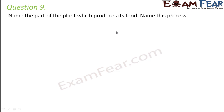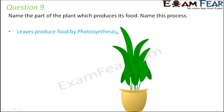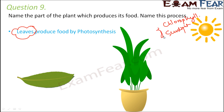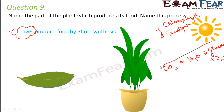Question number 9: name the part of the plant which produces its food, and name the process. Food is prepared by photosynthesis — that is, synthesizing food in the presence of light. To prepare food by photosynthesis, chlorophyll is needed. Chlorophyll is a green colored pigment present in the leaves, so leaves perform photosynthesis. In the presence of chlorophyll and sunlight, carbon dioxide and water combine to form food in the form of glucose, and oxygen is also released.